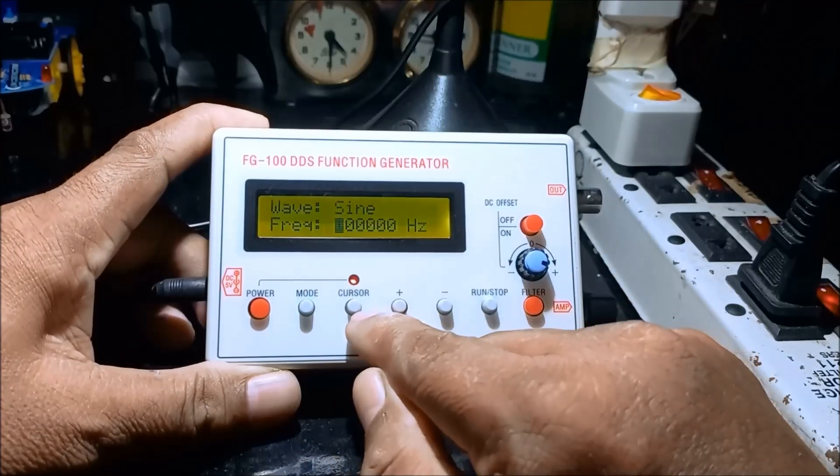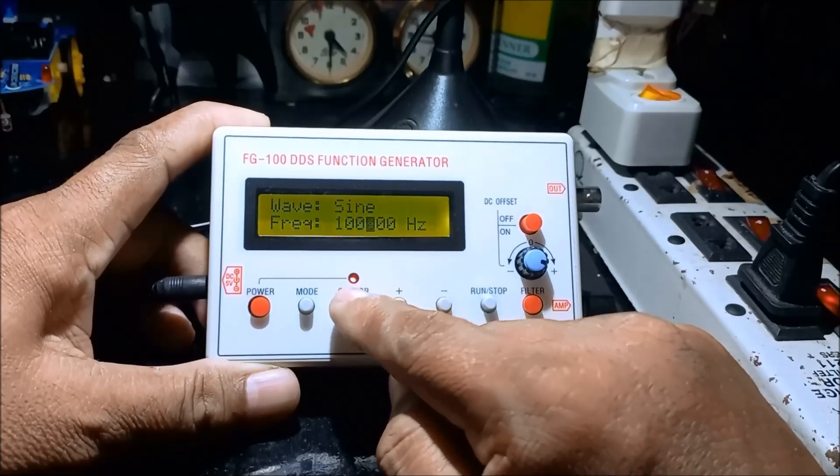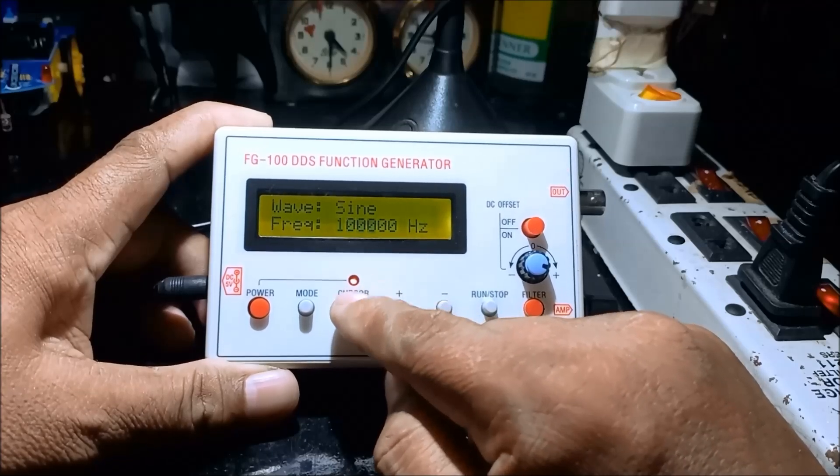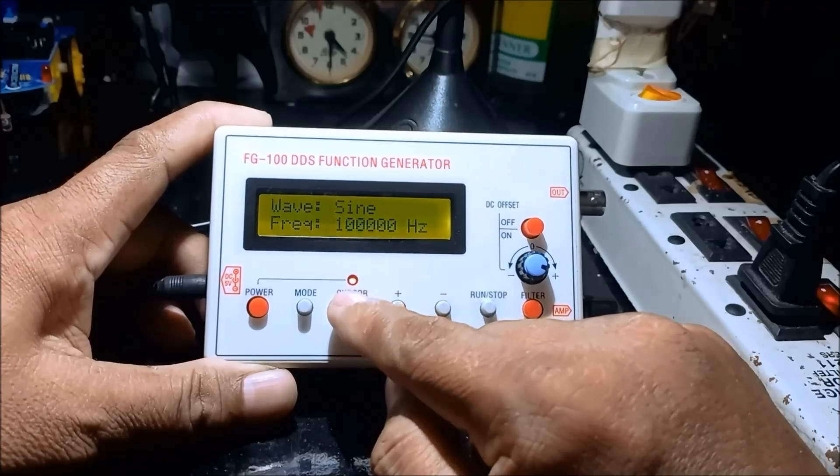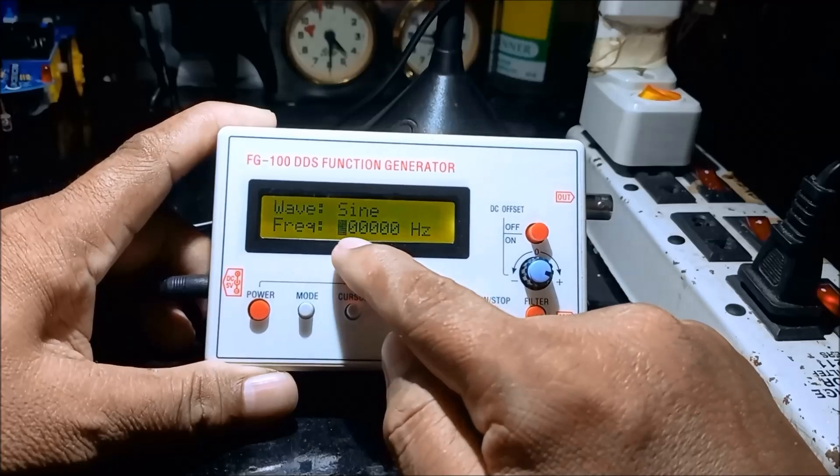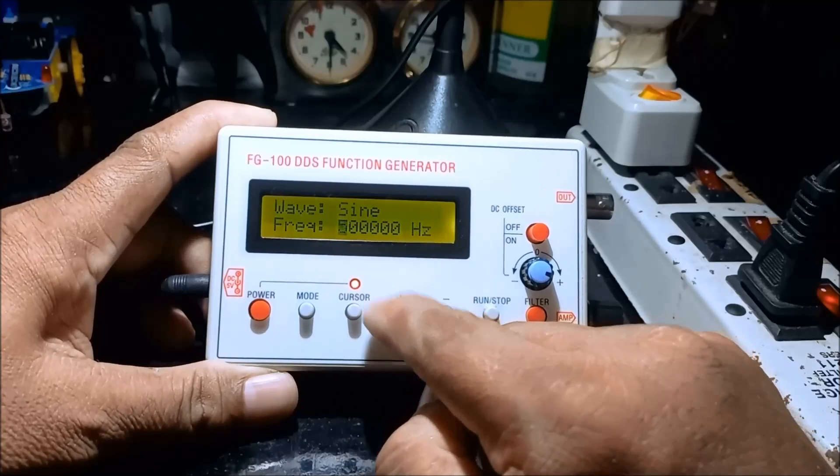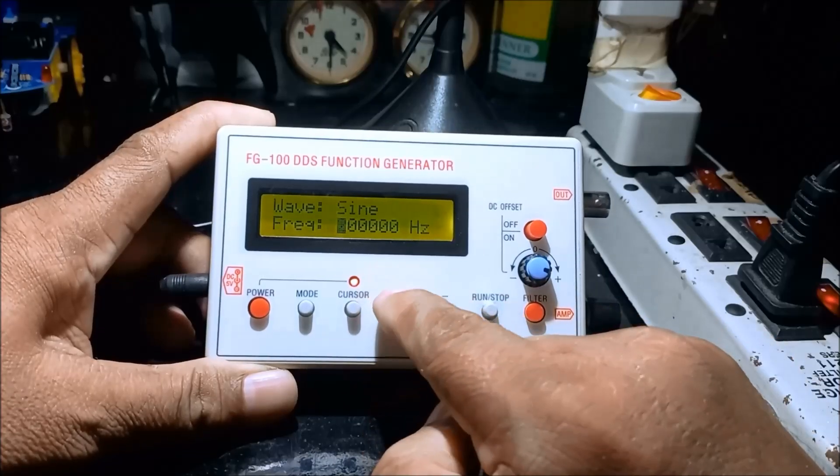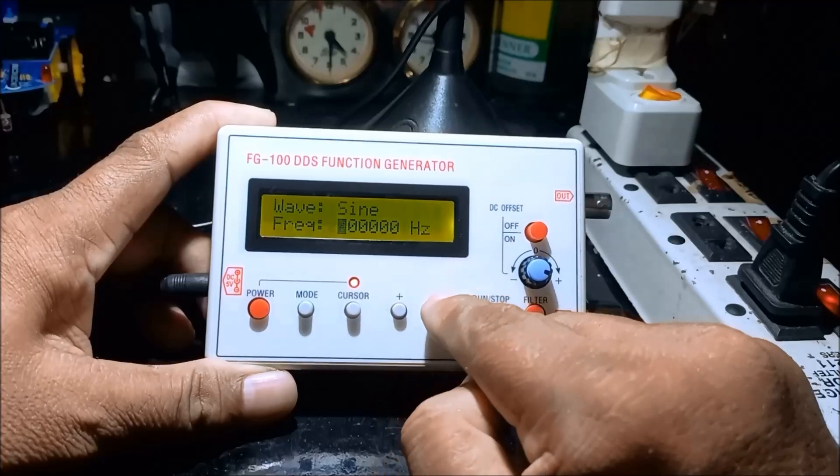And for the cursor, that is the cursor, the blinking cursor. You can adjust the position of the cursor. And for the plus, it increases the number. Minus decrease. Plus increase. 4, 5, 7. Decrease.